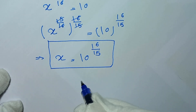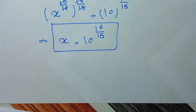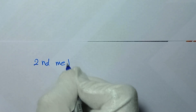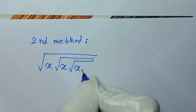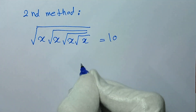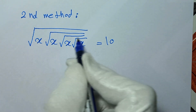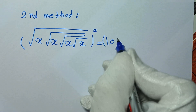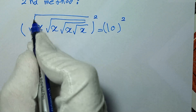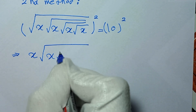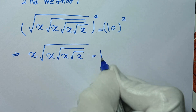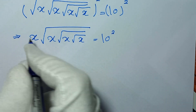In the next step we write the second method. Our problem is square root of x times square root of square root of x times square root of square root of square root of x times square root of square root of square root of square root of x equals 10. In this method we raise both sides of the equation to the power of 2. This cancels the first square root, giving x times square root of square root of x times square root of square root of square root of x times square root of square root of square root of square root of x equals 10 squared.